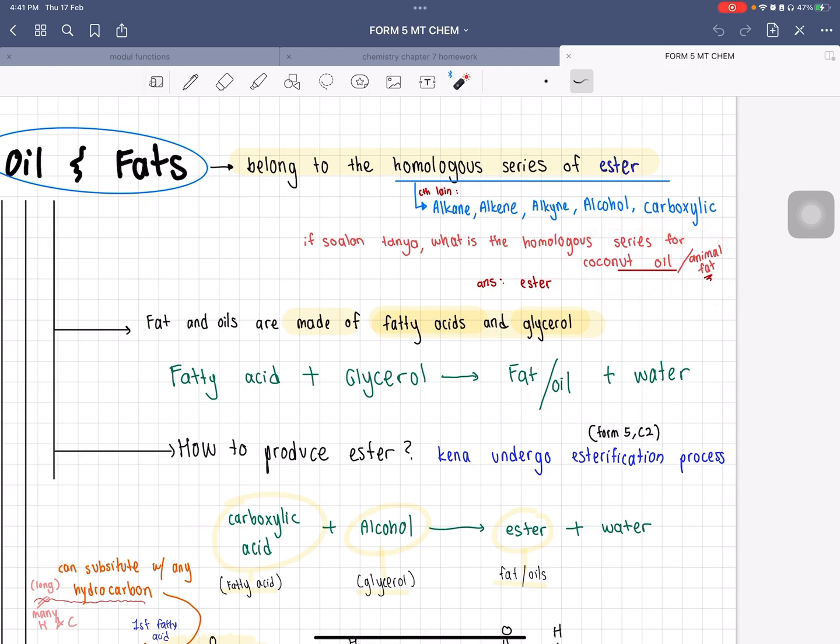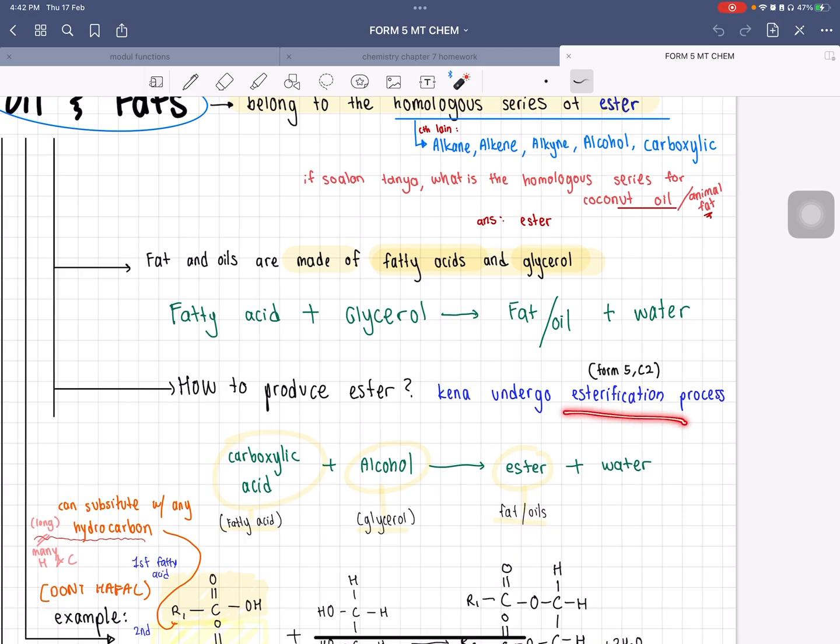Anything oil or fat related is under ester. Oils and fats are made out of fatty acid and glycerol. How do you produce ester? You have to undergo a process called esterification. Fatty acid plus glycerol will get you fat or oil plus water. Esterification is a process to produce ester, and ester is oil and fat.